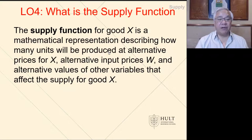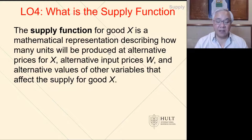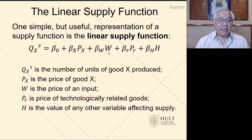We saw the mathematical relationship for demand, and we're going to do the same for supply. This is the supply function: the quantity of X supplied equals beta zero, which is the constant, plus the factors for the price of X.